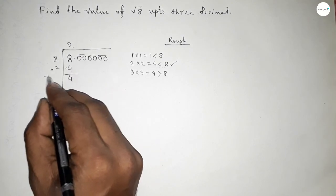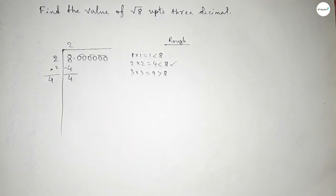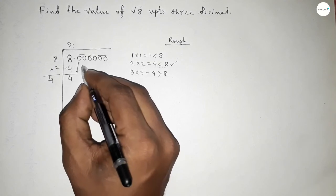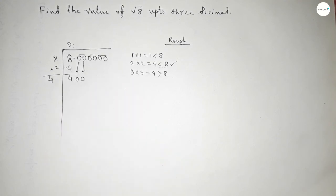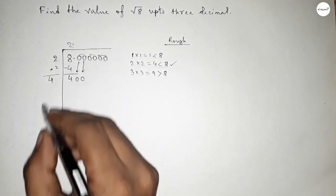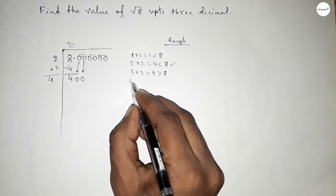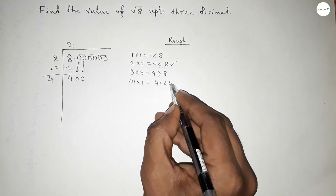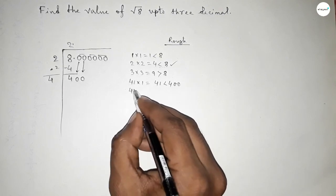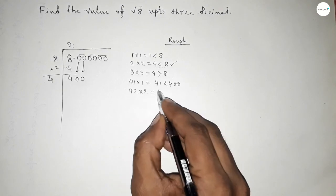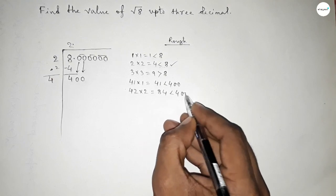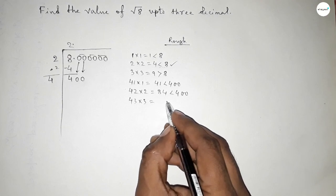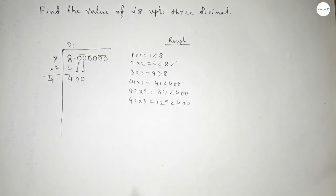Adding the last digit 2 by 2 gives us 4. Now the decimal point goes here, and we bring down the first pair of zeros, giving us 400. What number should we place beside 4? We multiply that number with the new divisor, and the product should be less than 400. If we put 1, the product is less than 400. If we put 2, then 84×2=168, which is less than 400.